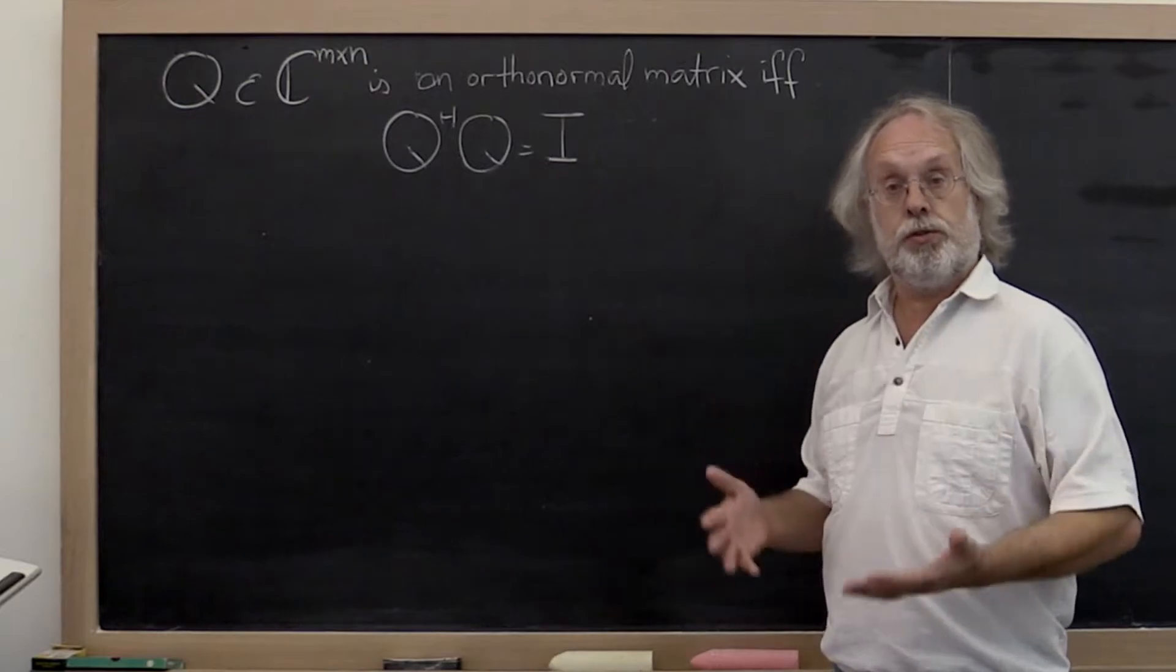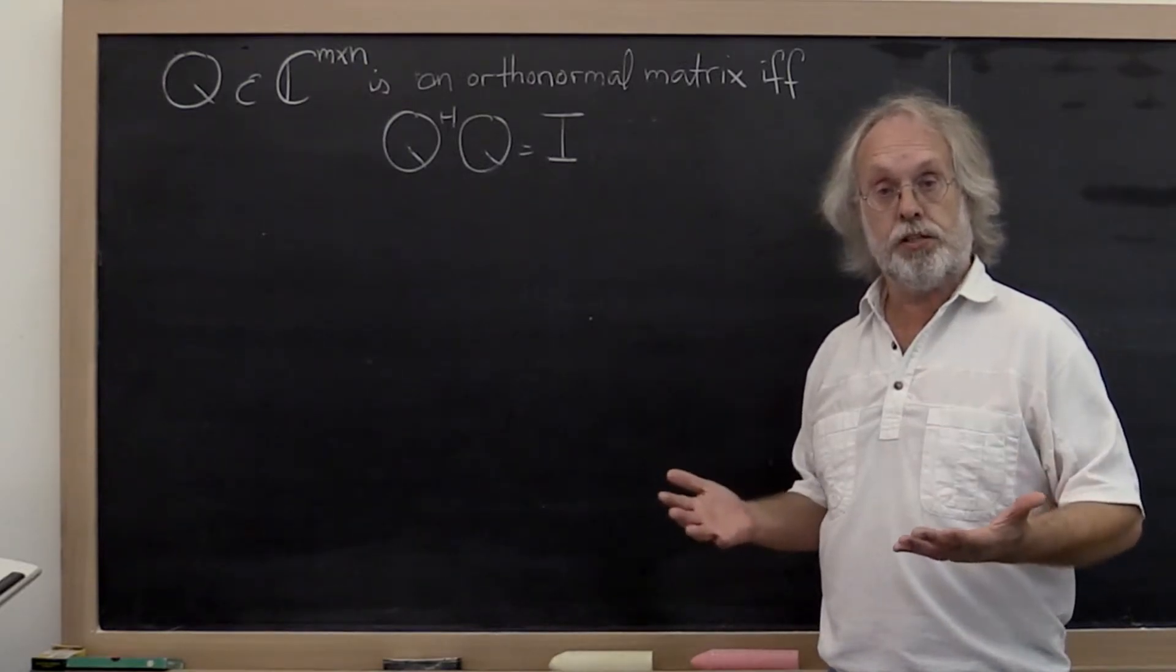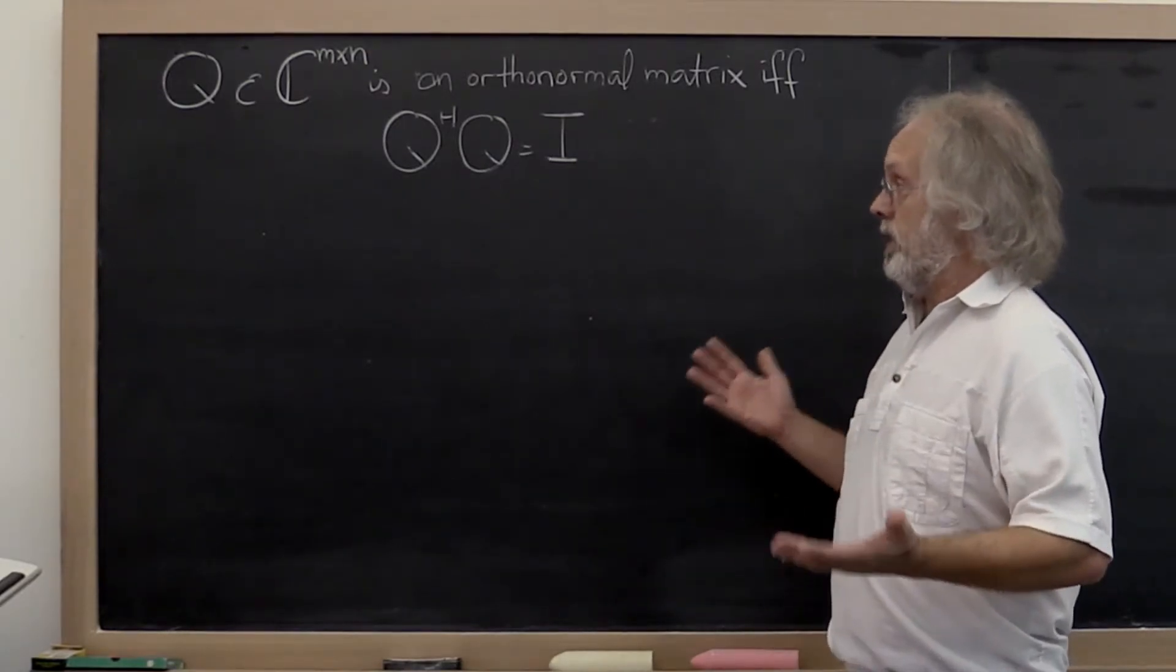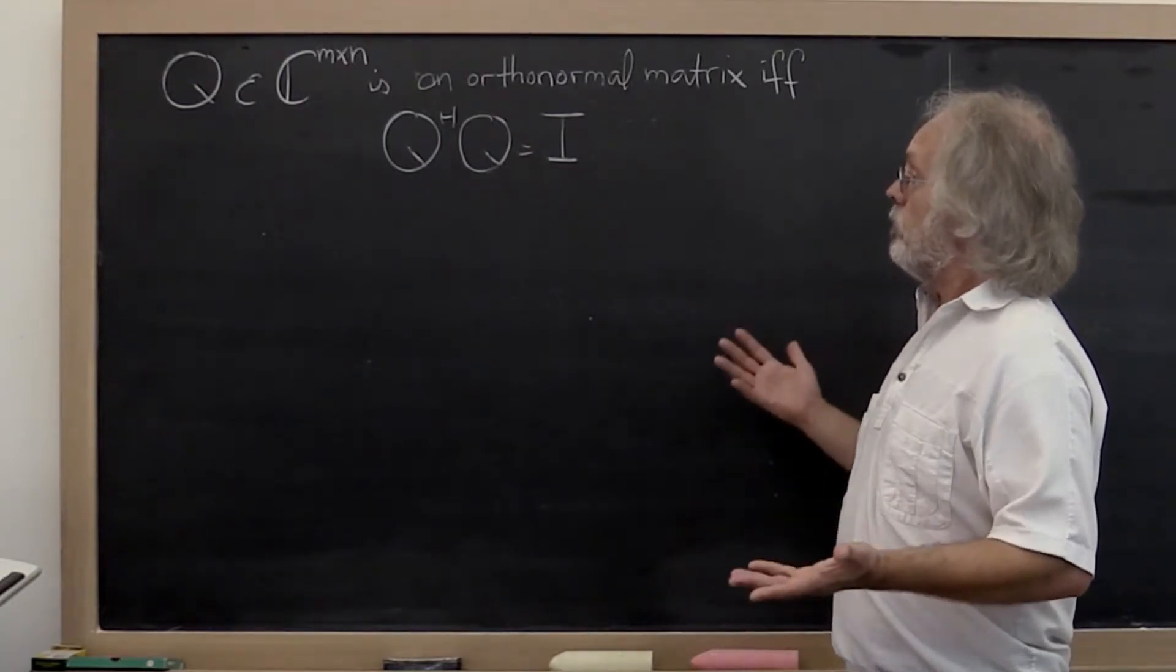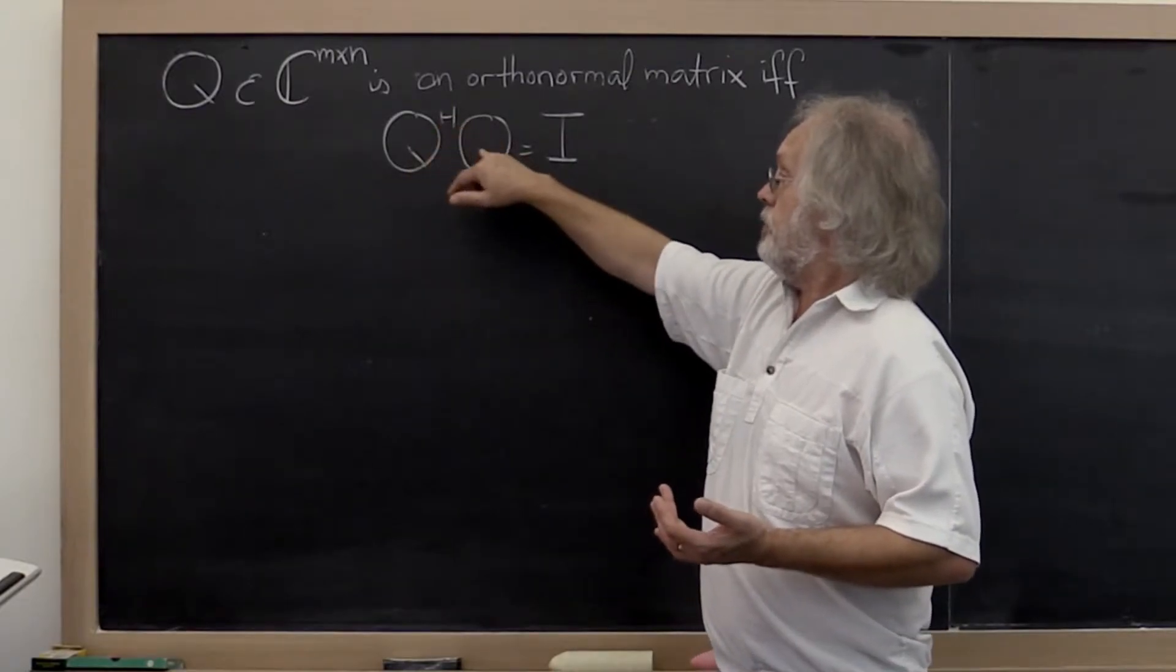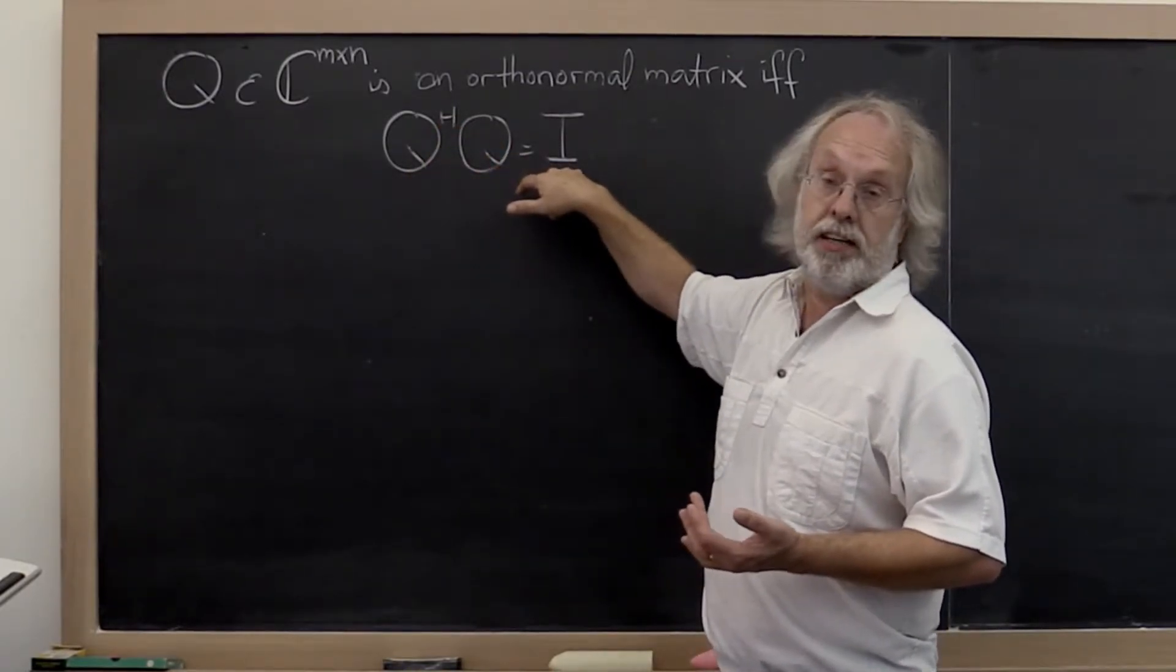In the last unit we were introduced to a very special kind of matrix known as an orthonormal matrix. And an m by n matrix is orthonormal if and only if Q Hermitian transpose times Q is equal to the identity.